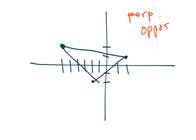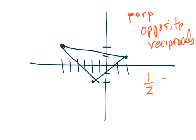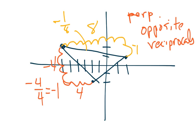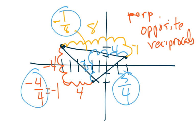Perpendicular lines are opposite reciprocals — for example, a slope of 1/2 is perpendicular to negative 2 over 1. Finding each slope: the first side is negative 4 over 4, which equals negative 1. The second side is negative 1 over 8. The third side is 3 over 4. None of those match up as opposite reciprocals, so this is not a right triangle.